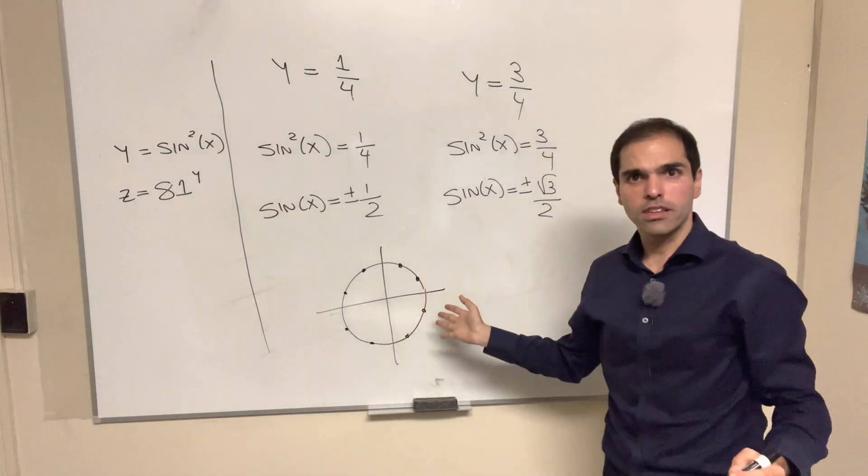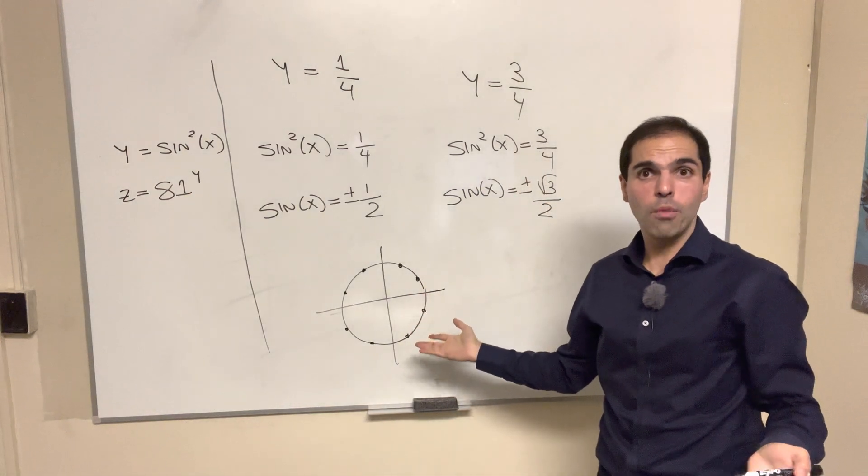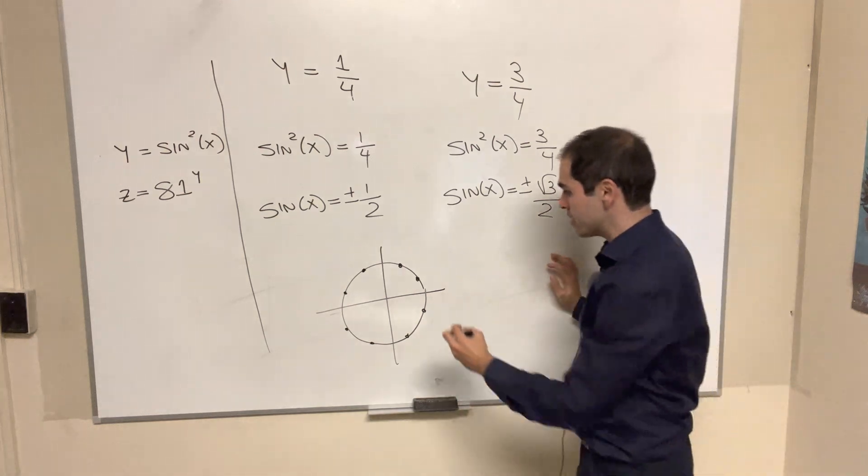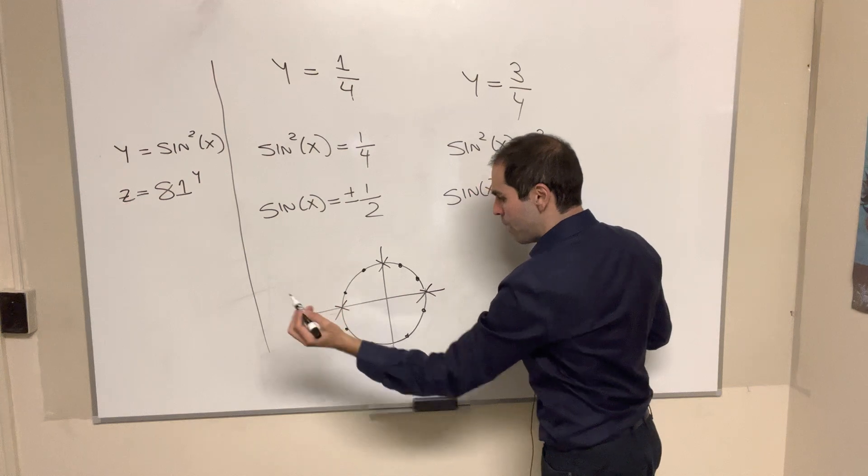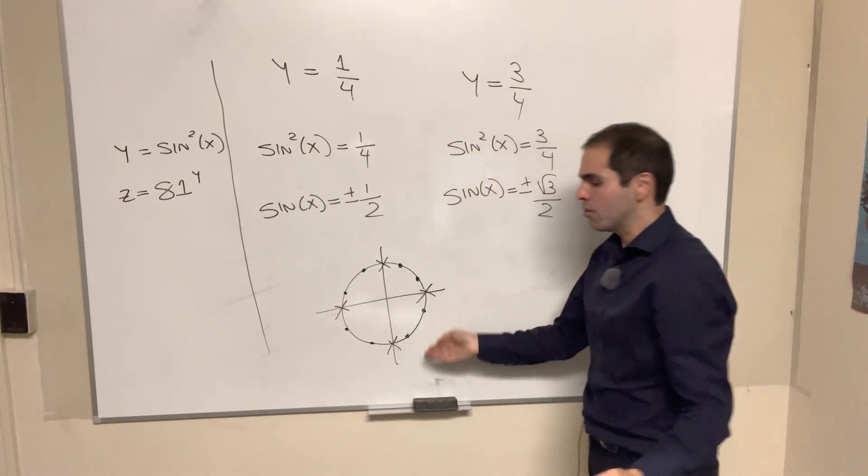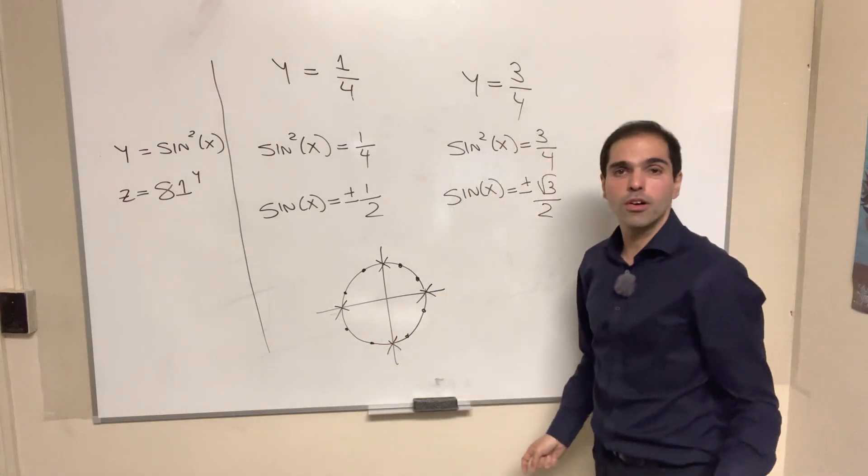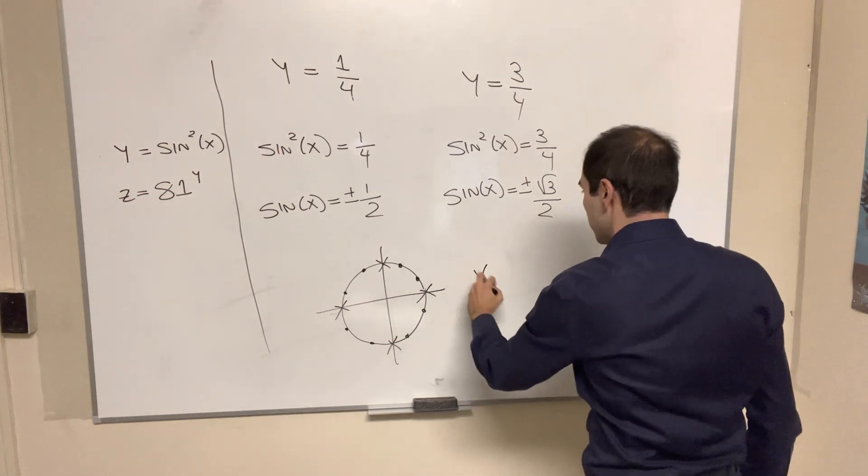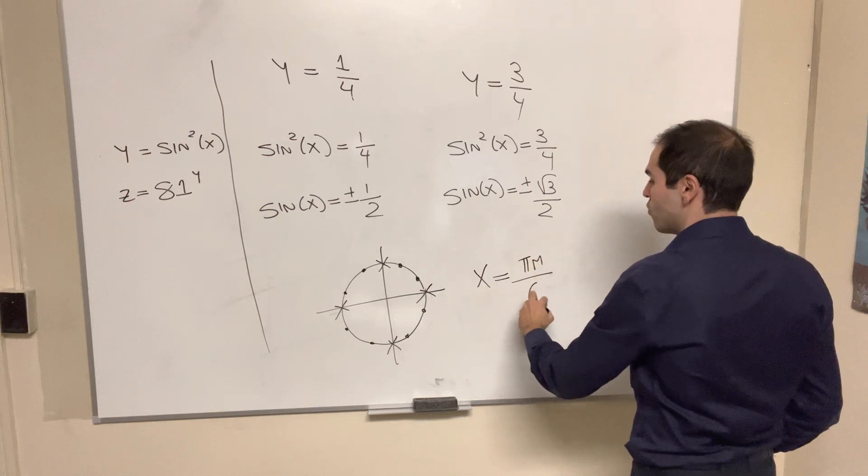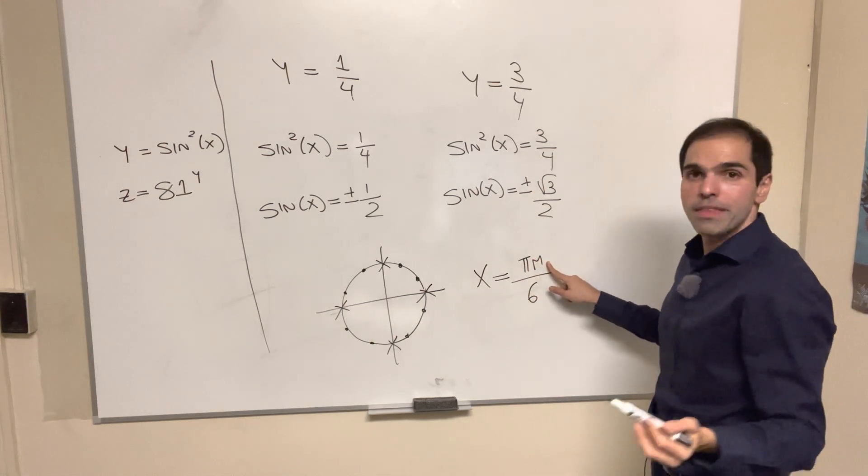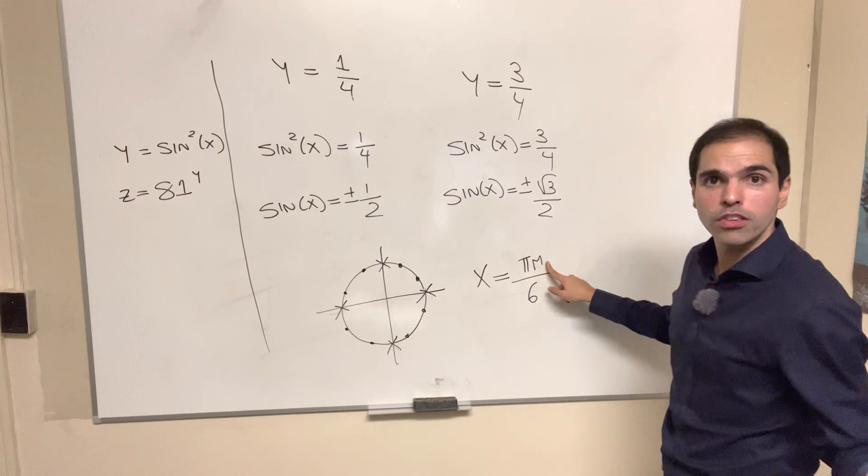And if you think about this, it's all the multiples of pi over 6, except 0, pi over 2, pi, and 3 pi over 2. Again, up to multiples of 2 pi. So I believe all this is, it's just me, pi m over 6,